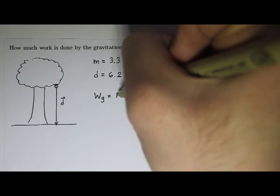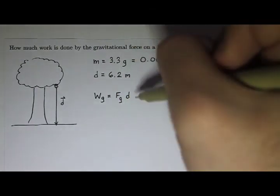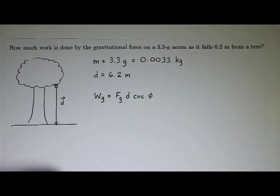And so that is the magnitude of the gravitational force times the magnitude of the displacement times the cosine of phi. Okay, now remember phi is the smaller angle between the force vector and the displacement vector when they're placed so their tails coincide. Okay, so let's figure out what that angle is.